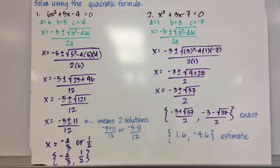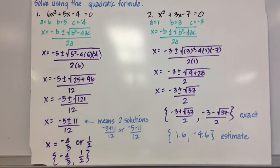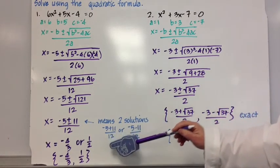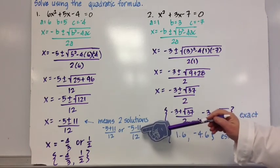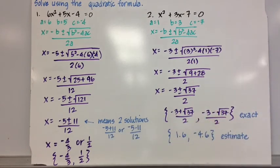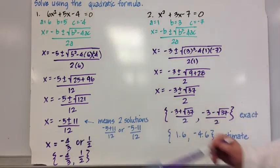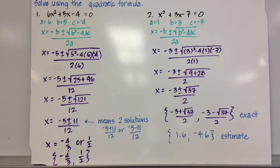And yay, 121 is a perfect square. So that becomes negative 5 plus or minus 11 over 12. Now notice, that means there's two solutions. Negative 5 plus 11 over 12, and negative 5 minus 11 over 12. So we simplify both of those fractions to get x is negative 4 thirds, or x is 1 half. Our solution set is negative 4 thirds and 1 half.